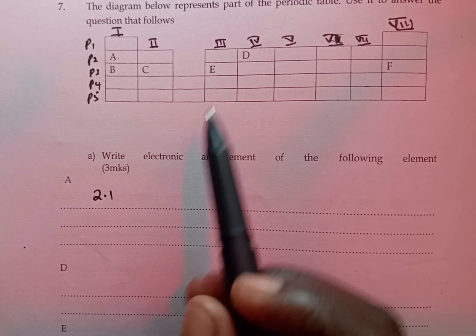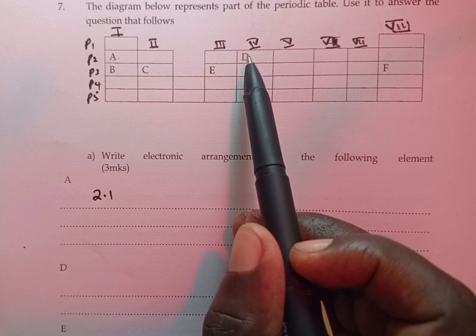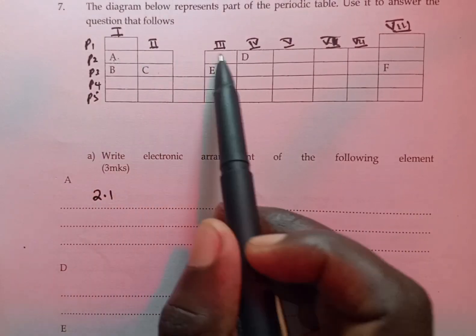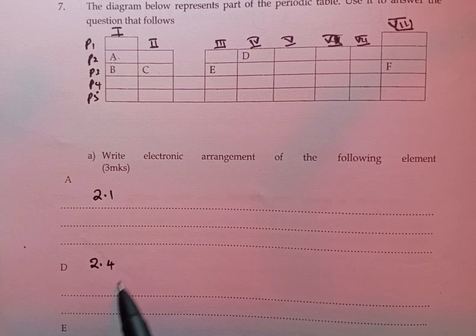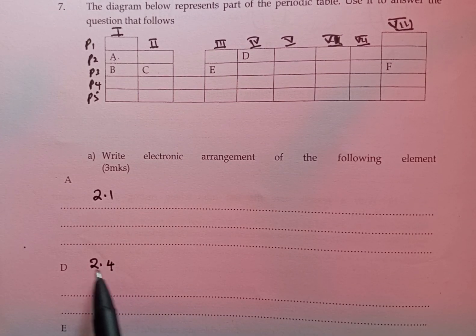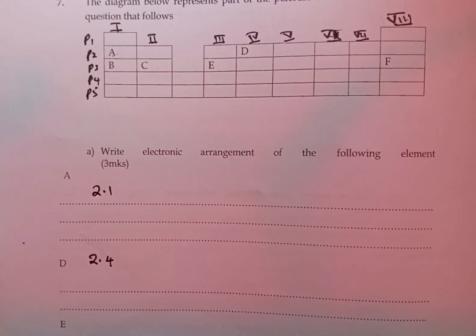We go to D. You realize D is in group 4, but period 2, meaning the electron arrangement is going to be 2, 4, giving us group 4, period 2, since it has two occupied energy levels.